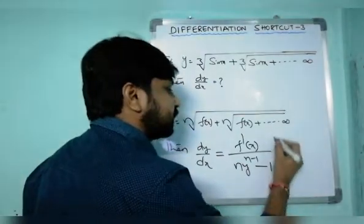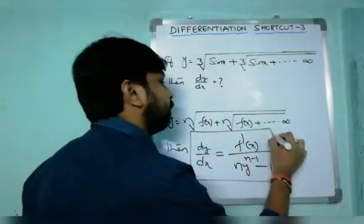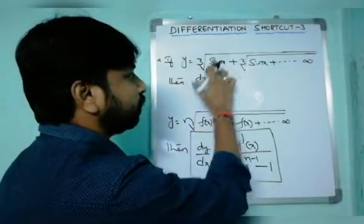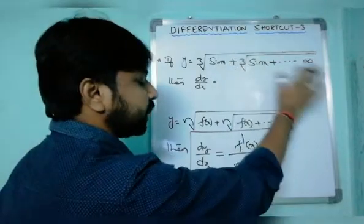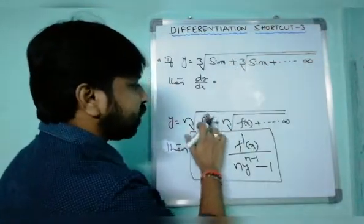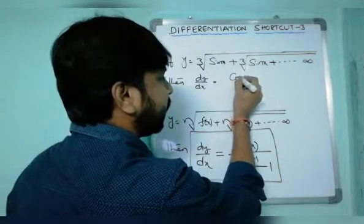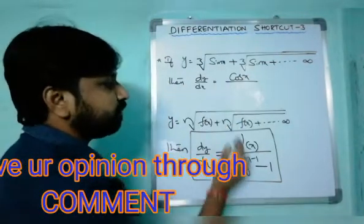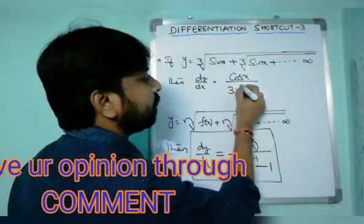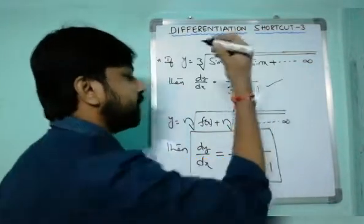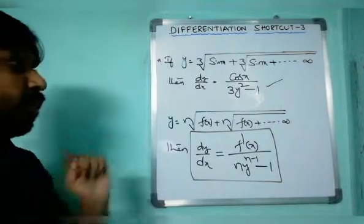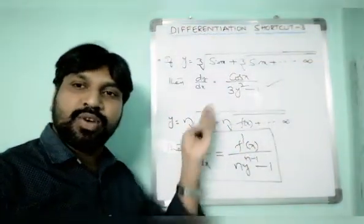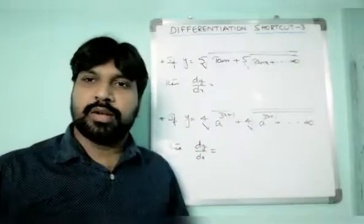Applying the shortcut to our example: f(x) is sine x, so f'(x) is cos x. n is 3 (cube root). So dy/dx equals cos x divided by 3 times y to the power (3 minus 1), which is 3y² minus 1. That gives cos x divided by (3y² minus 1) — confirming our earlier answer.